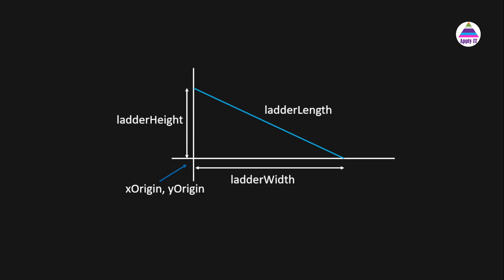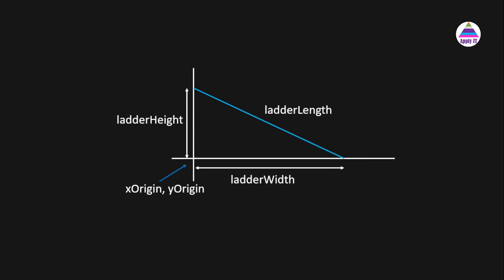We have ladder height, ladder width, and ladder length. In this whole setup when the ladder is sliding, the ladder length is not going to change. When we decrease the ladder height it increases the ladder width, but the ladder length remains constant.